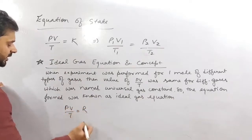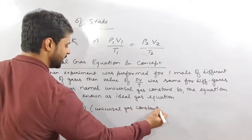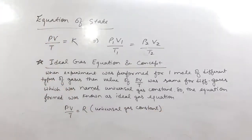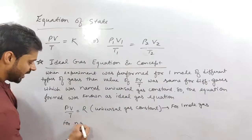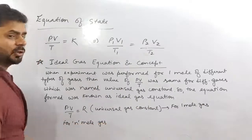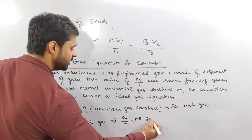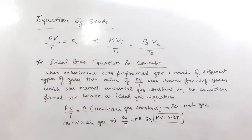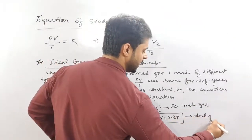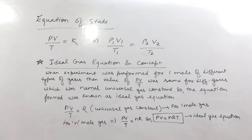PV/T was called R — the universal gas constant. Is that clear? For one mole of gas, PV/T = R. Then for n moles of gases, PV/T = nR. So PV = nRT. This equation is called the ideal gas equation. Please pause, take a screenshot, or note this down in your copy.